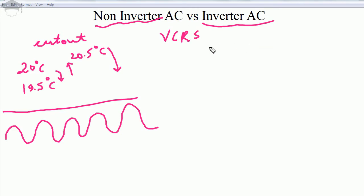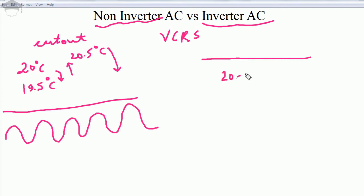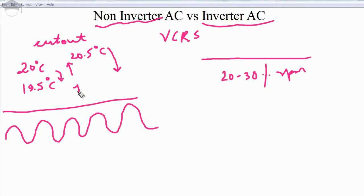In inverter AC technology, the basic operation is the same — it operates on the VCRS cycle as well — but the compressor does not turn off and on. It is constantly on and operates at 20 to 30 percent of the RPM, meaning it is always on and works at only 20 to 30 percent of the total load.